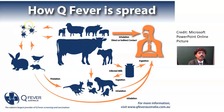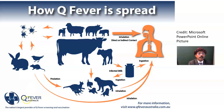Ticks also act as a reservoir. However, transmission from tick to human is most unlikely. Transmission from tick to animal is more common. Q-fever from tick to animal is more common than from tick to human, so the tick serves as a vector for Q-fever primarily among other animals.